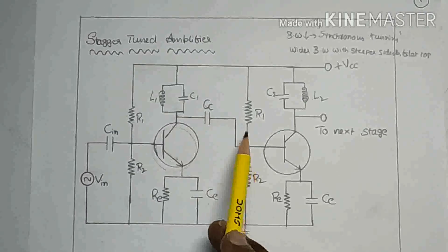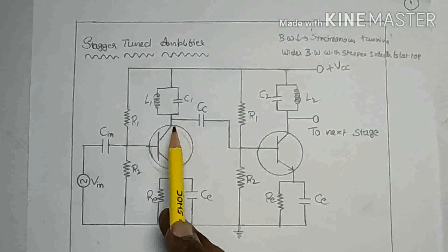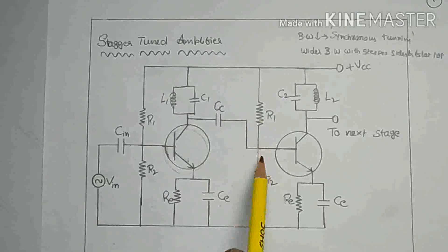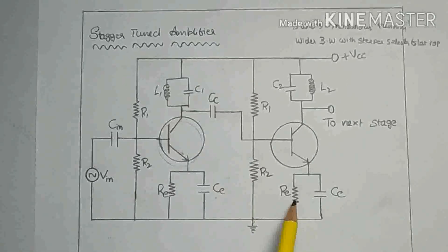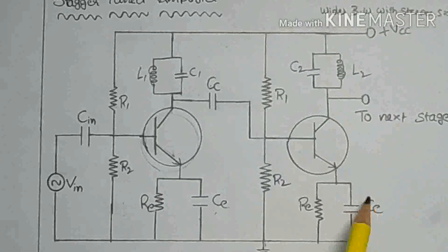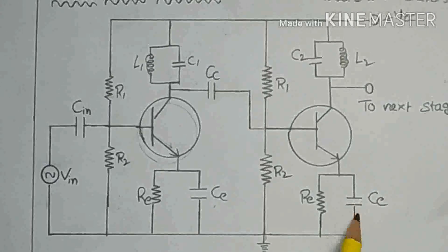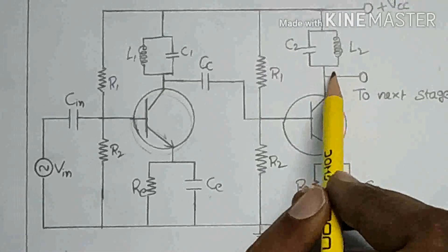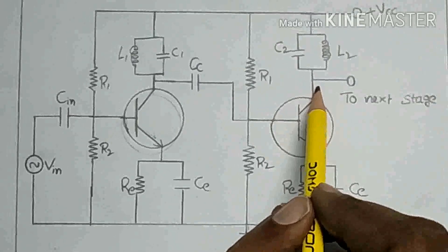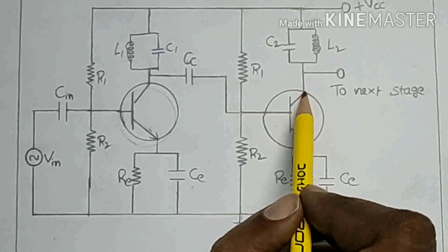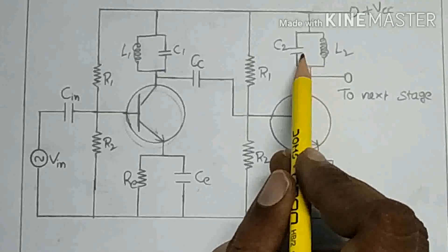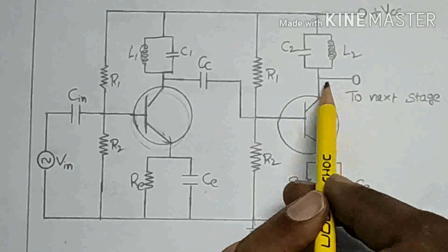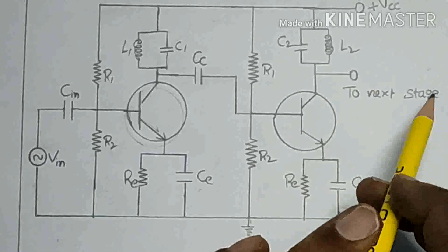The coupling capacitor couples the first stage as well as the second stage. Here R1, R2, and RE provide proper biasing and stabilization, and CE acts as a blocking capacitor. It blocks all DC signals and allows the AC signal. The output voltage is collected across the second stage collector, and the tank circuit generates a particular frequency. The output is then connected to the next stage.